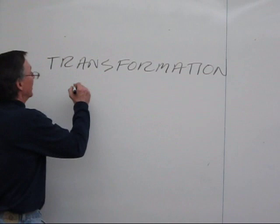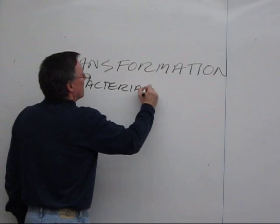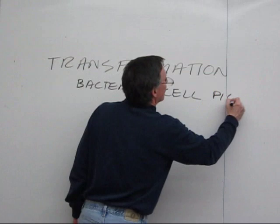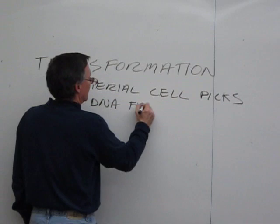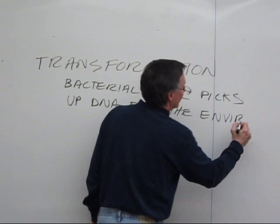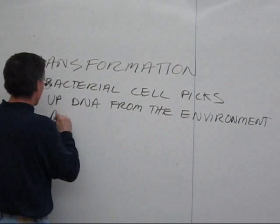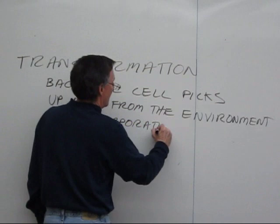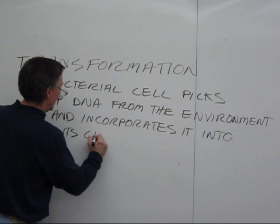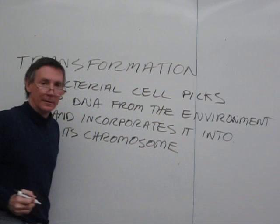We now understand transformation to mean that what's happened is that a bacterial cell, in this case the live 2R cell, is picking up DNA from the external environment and incorporating the DNA into its chromosome.